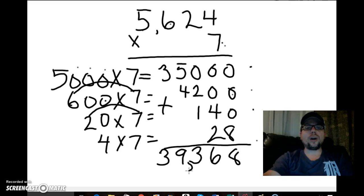And now I have the product of 5,624 times 7 equals 39,368. And that's how we do partial products. So on to your turn to try it on our game today. Have fun!